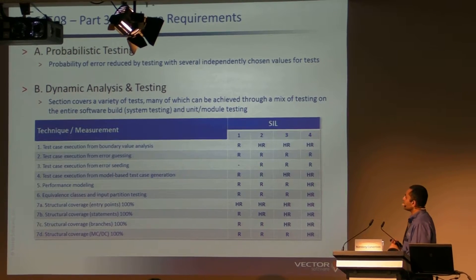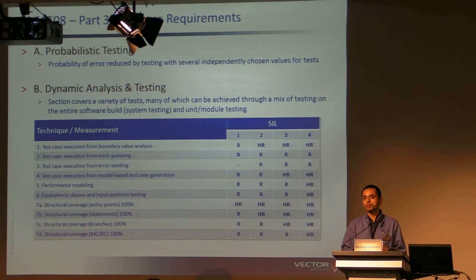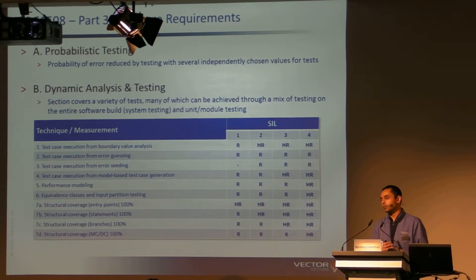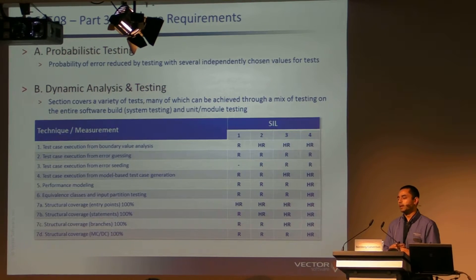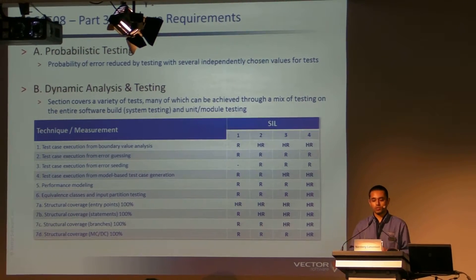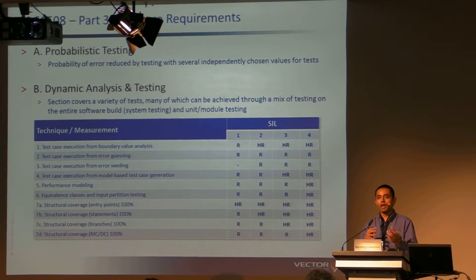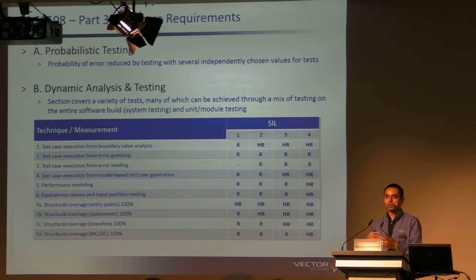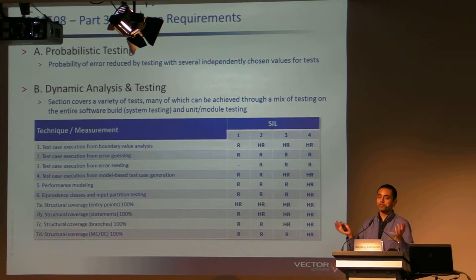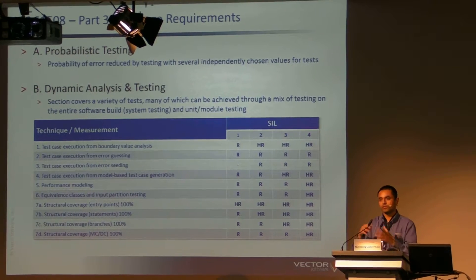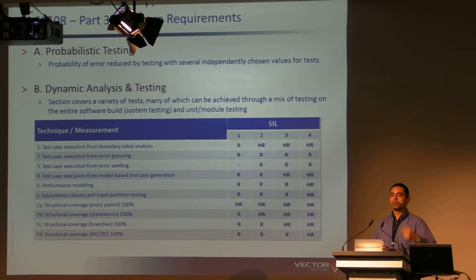Point four is the test case execution from model-based test case generation. Model-based testing is interesting because we're seeing more and more companies using tools like Rhapsody, Simulink, Artisan, or other tools where they're building up the model and simulating it to verify that the model is behaving correctly. Then they're generating the source code from this and trying to validate the source code. The idea here is that if you've gone to all this effort of validating the model, why not take the data you're using to validate the model and repeat that also with the source code? Extracting the data from Simulink or Rhapsody and putting that into your test tool improves the efficiency of defining the test cases. If you change the model later on, you just quickly recreate the test cases based on the model-based testing.